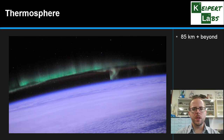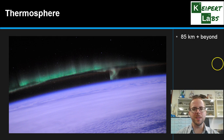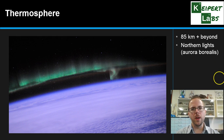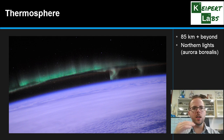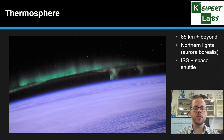Now let's talk about the thermosphere, which is 85 kilometres in altitude and beyond. Sometimes we refer to an additional sphere outside called the exosphere, though within our syllabus we don't focus on it much — the boundary is very fuzzy. In the thermosphere, we experience the northern lights, or aurora borealis — charged particles from the sun travel in the solar wind and congregate around the North and South Poles, producing amazing colourful swirls. This image shows aurora borealis taken from the International Space Station, which orbits in the thermosphere at around 100 kilometres altitude.